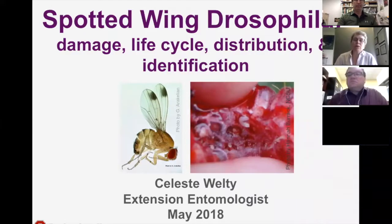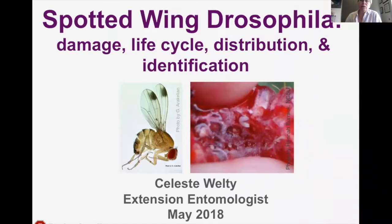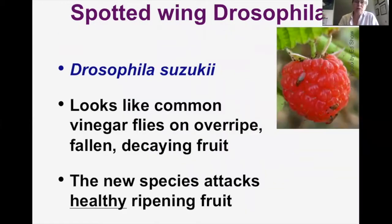We're going to give you an introduction to this pest, what its damage looks like, its life cycle, and an introduction to identification that Jim will get into in more detail. The species name is Drosophila suzukii. The word Drosophila should be familiar — it's a well-known genus — but suzukii is a new species for us in the USA. It looks very similar to our common vinegar fly found on overripe, fallen, decaying fruit. But this new species attacks healthy ripening fruit before it's harvested, whereas the common vinegar fly is only on overripe fruit.